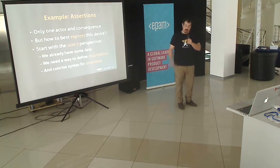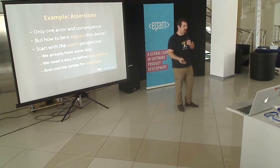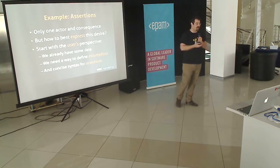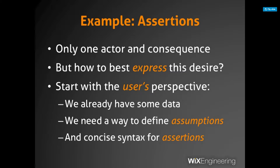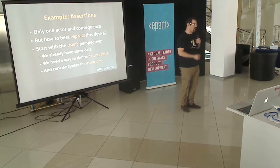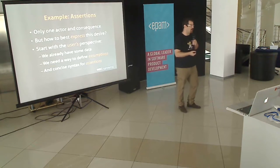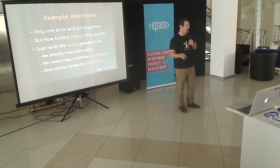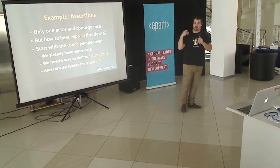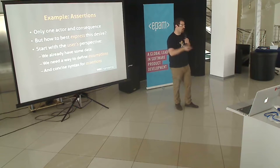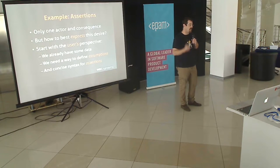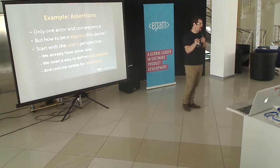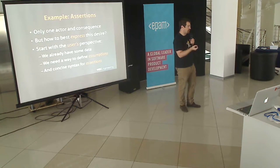For assertions, there's only one actor and one consequence: I'm asserting that a piece of data matches the assumption I have on its shape, and the consequence is an exception being thrown. The real question is: if I'm providing an assertion API to my users, what is the best way for them to express what it is they want? I have a list and I want to make sure it's not empty — what is the best syntax for my users to express that in a language built on top of Scala?